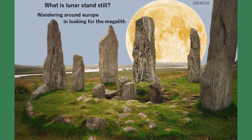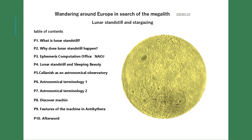Wandering around Europe in search of the megalith: lunar standstill and stargazing. Table of contents: P1 What is lunar standstill, P2 Why does lunar standstill happen, P3 Ephemeris computation office NAOJ, P4 Lunar standstill and Sleeping Beauty, P5 Callanish as an astronomical observatory, P6 Astronomical terminology 1, P7 Astronomical terminology 2, P8 Discover the Antikythera machine, P9 Features of the Antikythera machine, P10 Afterward.